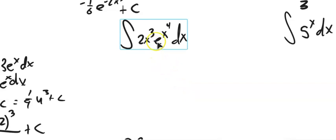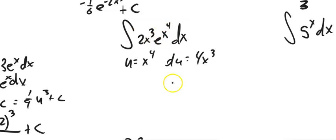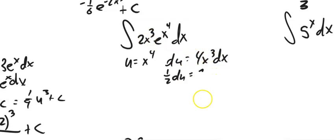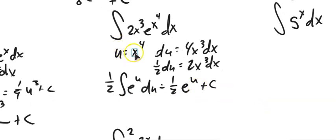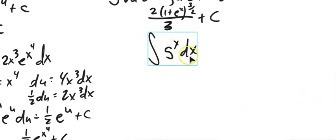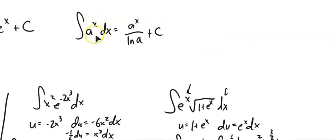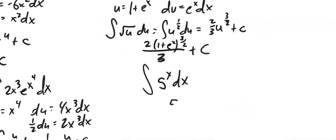Looking at this one: I've got e to some power here. I'm going to let u be x to the fourth. The derivative of that is 4x cubed dx. I have a 2x cubed here, so I'm going to cut this in half to make it match. So 2x cubed dx gets replaced with 1/2 du — I'll pull that 1/2 out right away. e to the u du is its own derivative, and I know u was x to the fourth, so this should be 1/2 e to the power of x to the fourth plus some constant. Next: derivative of 5 to the x — notice there's no e here, so I go back to that relationship: this must be 5 to the x divided by natural log of 5.